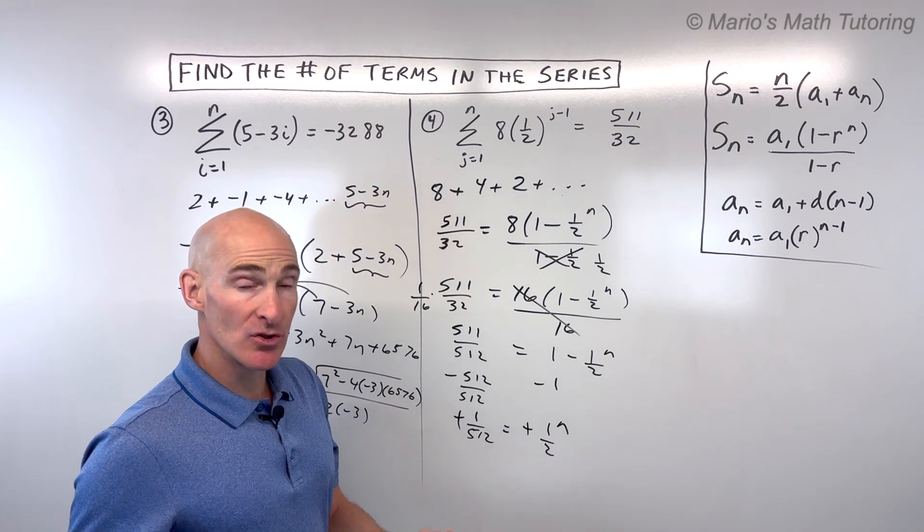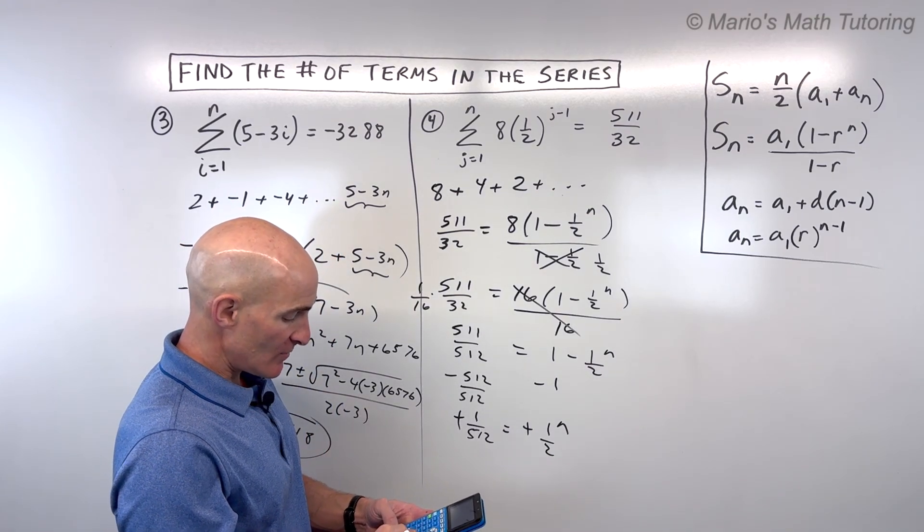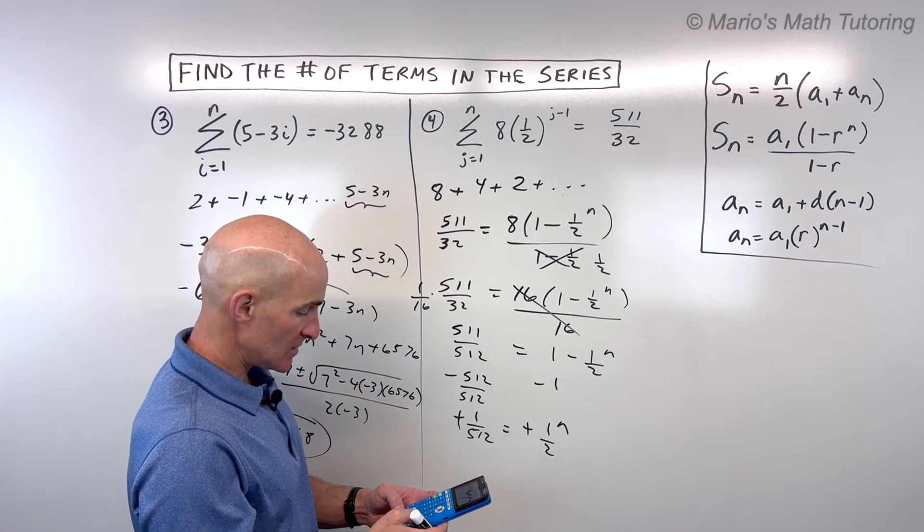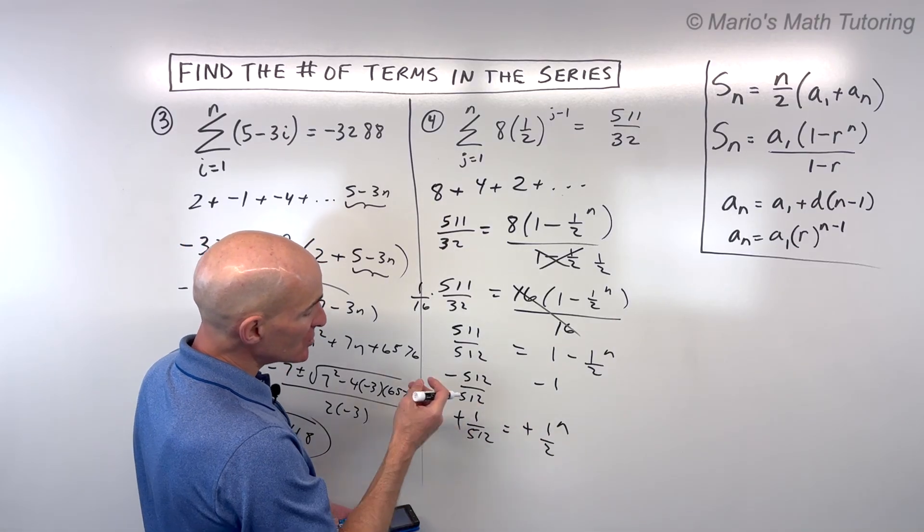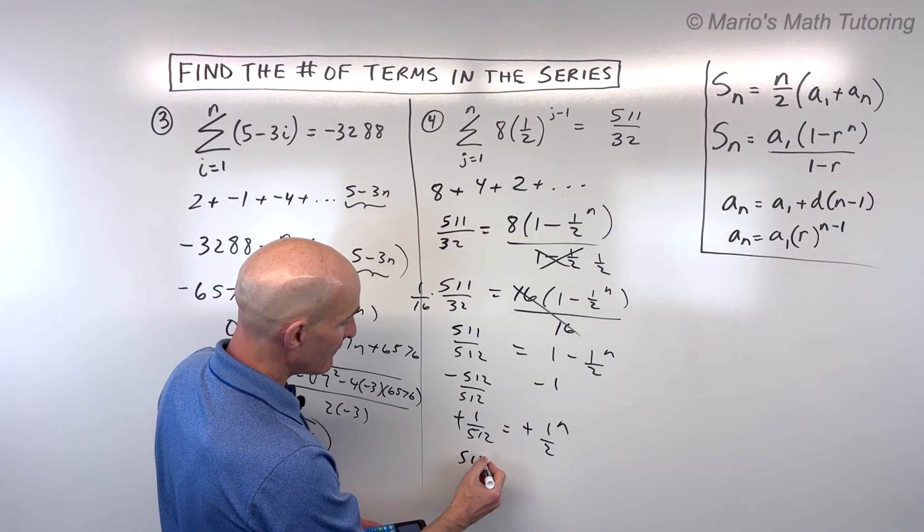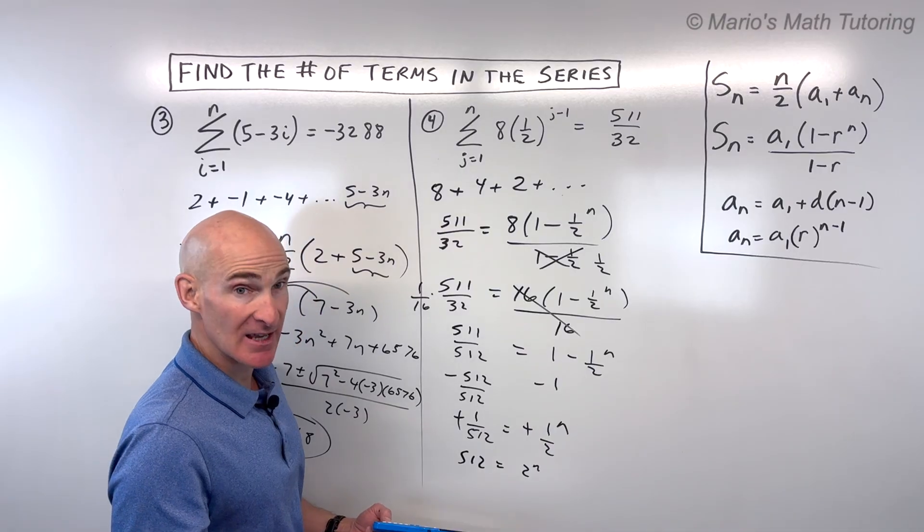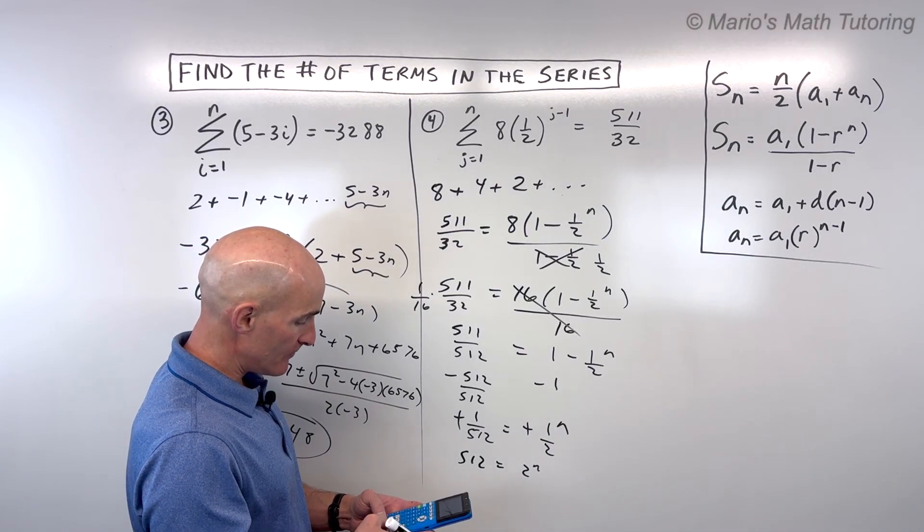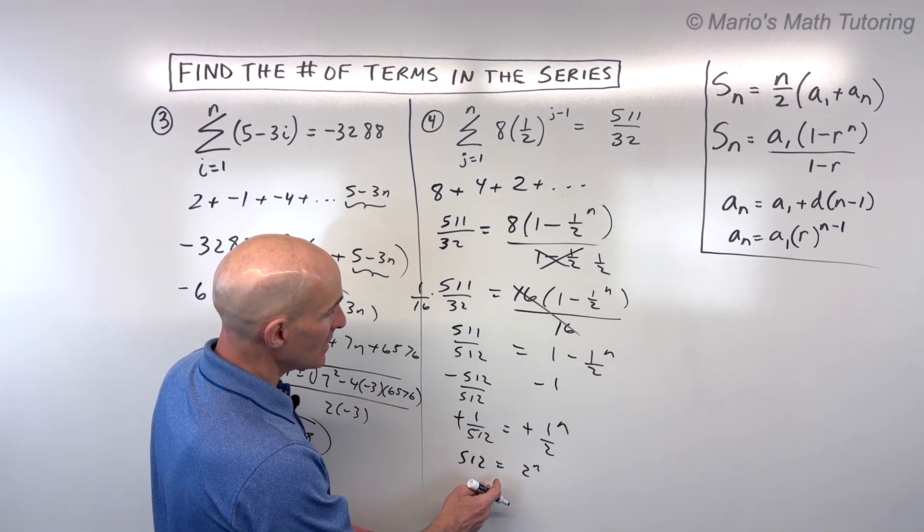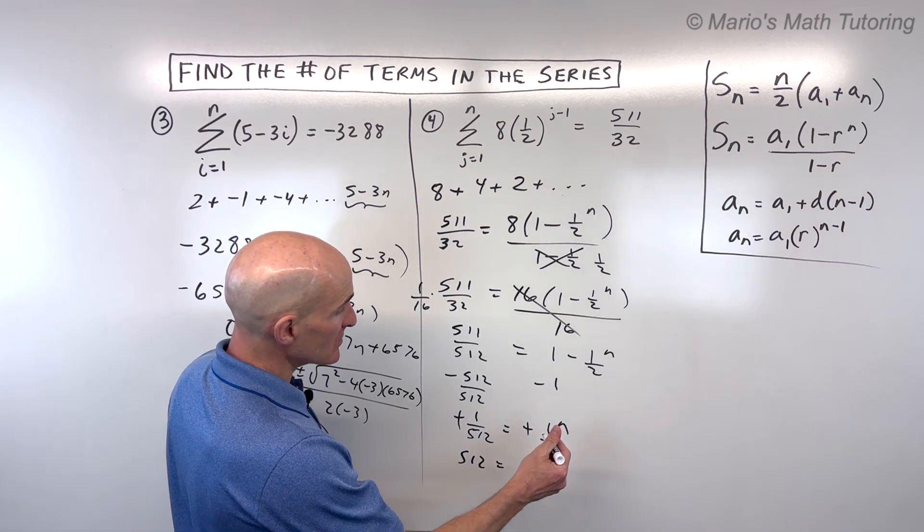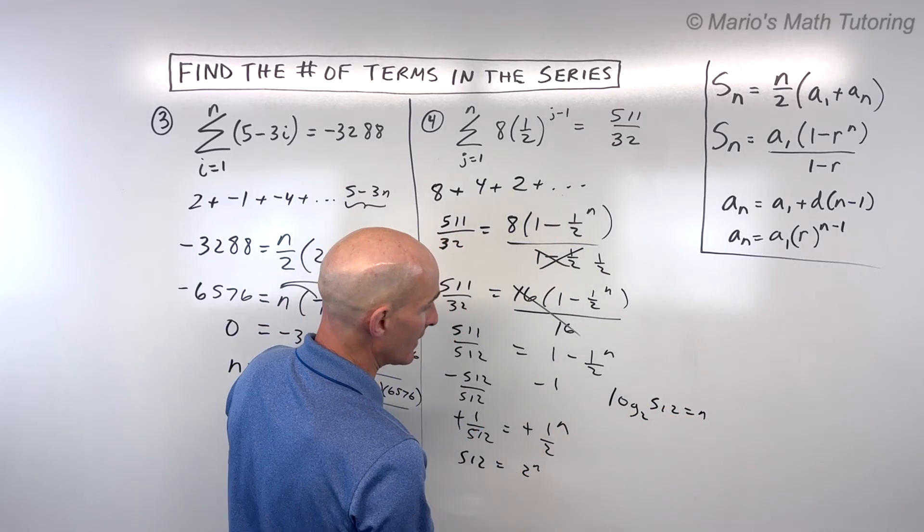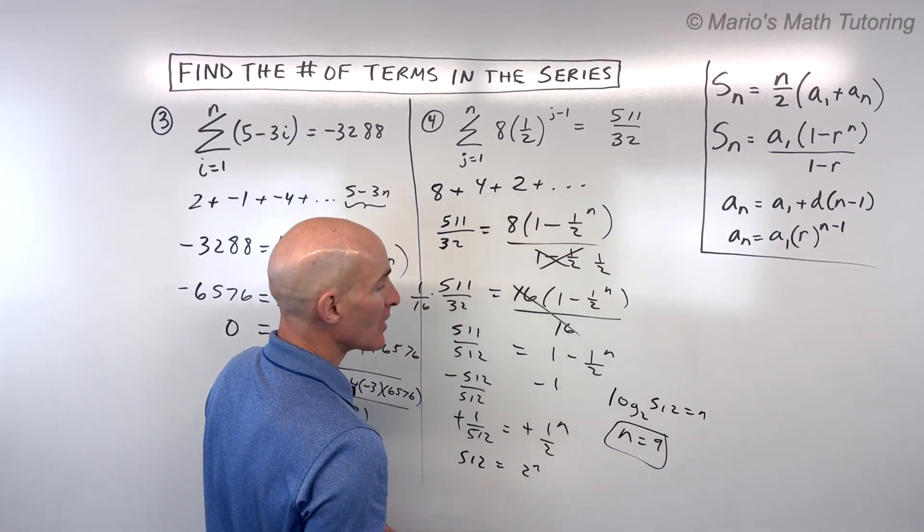And again, I can do some guess and check, or I can use logarithms. Let's just double check here. What you can also do too is, this is like 1 half. You could take the reciprocal of both sides and say like 512 equals 2 to the n. That's going to be the same thing. So 2 to the, it's 2 to the 9. So this is actually n equals 9. So I kind of did that trial and error. If you wanted to use logarithms, what you would do is you'd say log base 2 of 512 is equal to n. And that will give you 9 terms as well. So a couple different ways to do it.